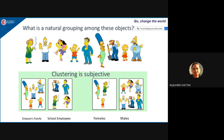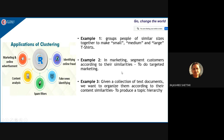Grouping is based on whatever characteristics or features are available. Clustering can be subjective — using the Simpsons family as an example, you could group them as Simpson's family members, school employees, females, males, kids, or aged people. That is why clustering is considered subjective. Applications include online marketing, advertisement, content analysis, spam filtering, fake news identification, and fraud detection.